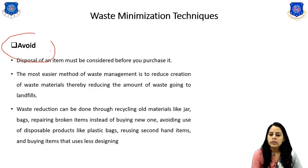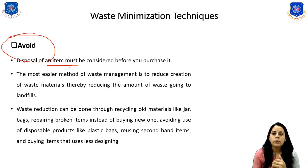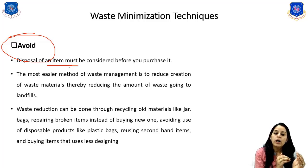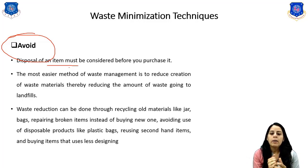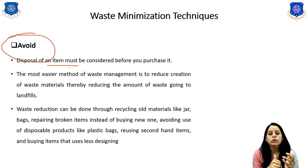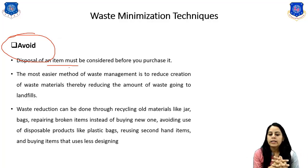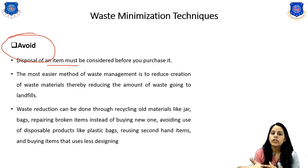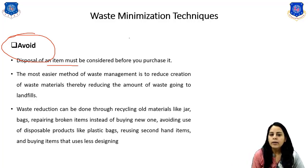The first technique is avoid. The disposal of an item must be considered before purchasing. The easiest method of waste management is to reduce the creation of waste material by reducing the amount of waste going to landfill. Waste reduction can be done through recycling old materials like jar bags, repairing broken items instead of buying new ones, avoiding disposable products like plastic bags, and reusing second-hand items.